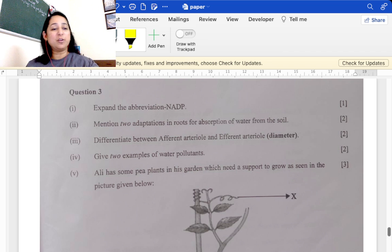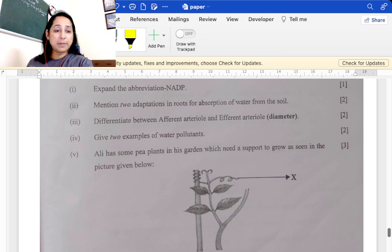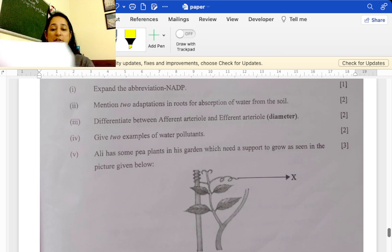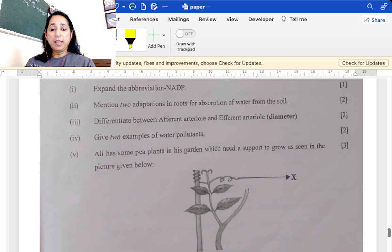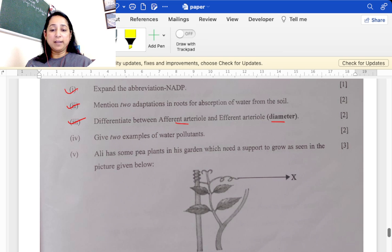Mention two adaptations of roots for absorption of water from the soil. Two adaptations are they have a large surface area plus they have root hair present in them. Differentiate between afferent arteriole and efferent arteriole. Afferent is narrow as compared to efferent which is wide. Give two examples of water pollutants: biomedical waste, pesticides, insecticides.